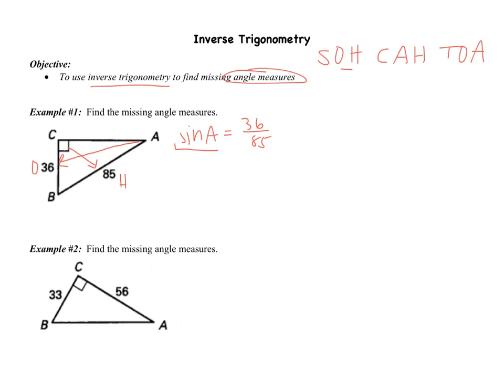I want to find angle A. Now what you need to know is that sine is an operation — I have the sine of A right now. How do I undo sine? Well, I take the inverse. So that's going to look like sine negative 1. I take the sine negative 1 on both sides — it's called the inverse. Examples of inverse operations would be like addition and subtraction: if I add 4, the inverse is subtracting 4. Another example is multiplying: if I multiply by 7, the inverse would be dividing by 7. So sine and inverse sine undo each other — on the left side they cancel each other out. So I'm left with angle A equals the inverse sine of 36 over 85.